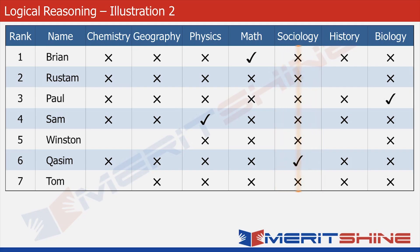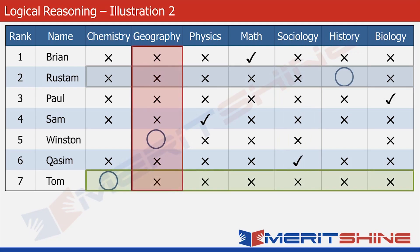Let's now look at the two highlighted rows of Rustam and Tom, and one highlighted column of geography. We realize that in each of these, there is just one vacant cell — the one with a circle — and the rest of the cells have all been crossed. It naturally means that there should be a check in all these vacant cells, since each row or column should have exactly one check. So we mark this up accordingly and move forward.